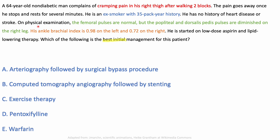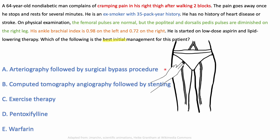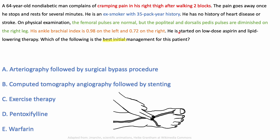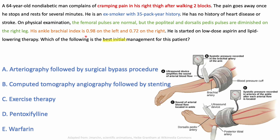On physical exam, femoral pulses are normal but the popliteal and dorsalis pedis pulses are diminished on the right leg — that's likely causing his symptoms. Diminished distal pulses indicate atherosclerosis in those arteries. The next step is a bedside test called the ankle-brachial index, where we compare blood pressure in the brachial artery to the blood pressure in the lower limb.